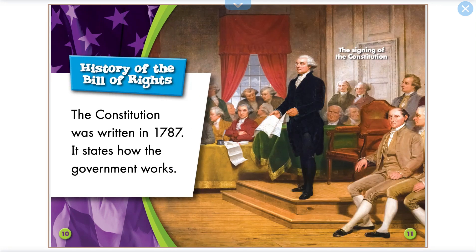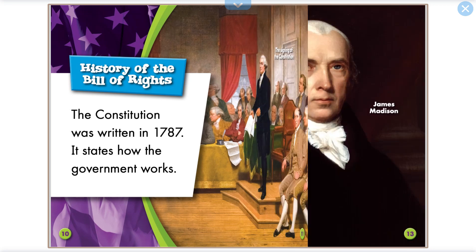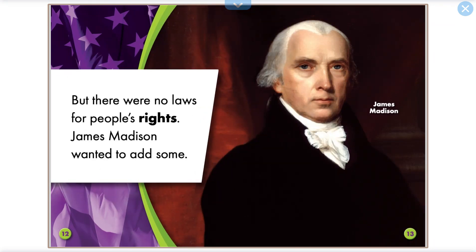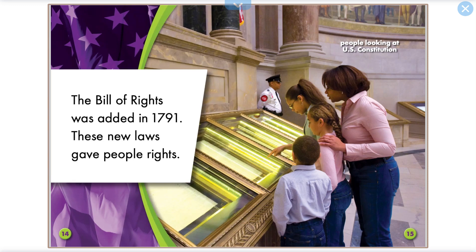History of the Bill of Rights. The Constitution was written in 1787. It states how the government works. But there were no laws for people's rights. James Madison wanted to add some. The Bill of Rights was added in 1791. These new laws gave people their rights.